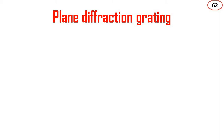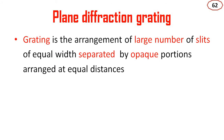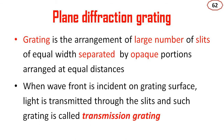Plane Diffraction Grating. Previously we discussed single slit and two slits. Now we are discussing the case of a large number of slits. A grating is the arrangement of a large number of slits of equal width separated by opaque portions arranged at equal distances. When a wavefront is incident on the grating surface, light is transmitted through the slits, and such a grating is called a transmission grating.